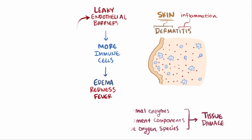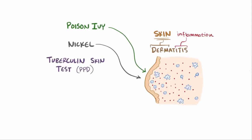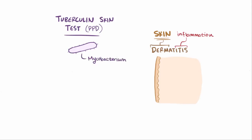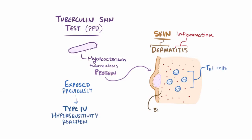This kind of contact dermatitis rash doesn't only happen from poison ivy. It can also happen in some people in response to wearing nickel, which is often found in earrings and necklaces. Another classic example is a tuberculin skin test, sometimes called a PPD, where a protein from the bacteria Mycobacterium tuberculosis is injected into the skin. If that person has been exposed to TB previously, they'll develop a type IV reaction where TB-specific TH1 cells migrate to the injection site and create an inflammatory response that results in the skin getting thick or hard, called induration.